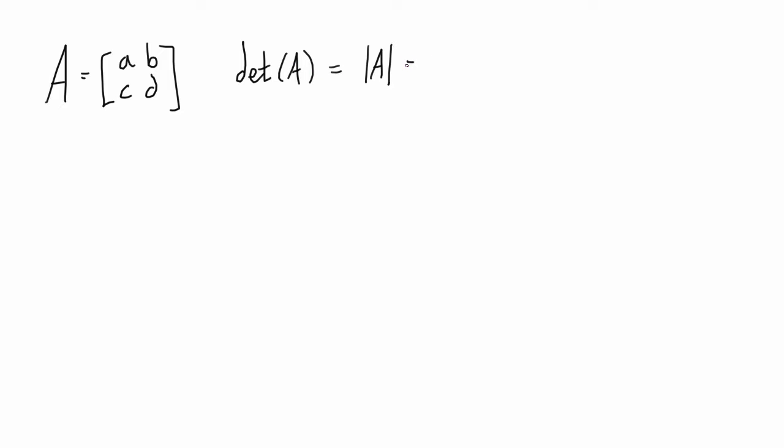The way that we calculate the 2x2 matrix determinant is we just multiply A times D minus B times C. We basically multiply this diagonal and subtract the product of the other diagonal, so we get AD minus BC. And that's it, we're just going to get a single number.